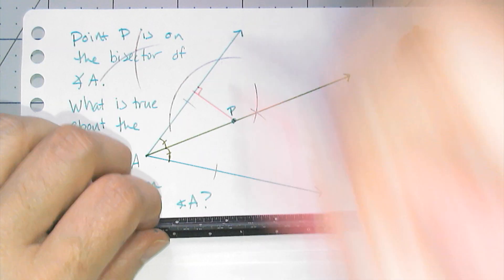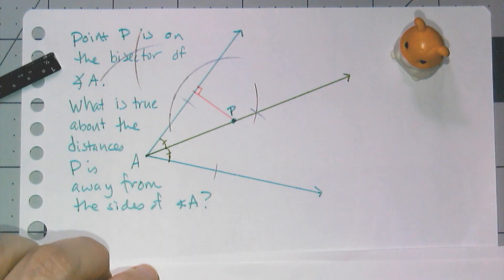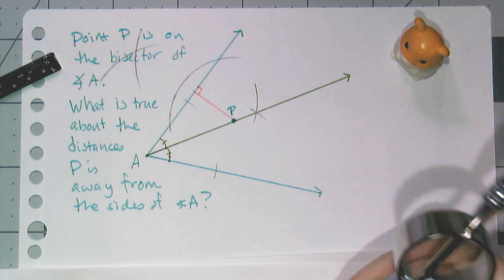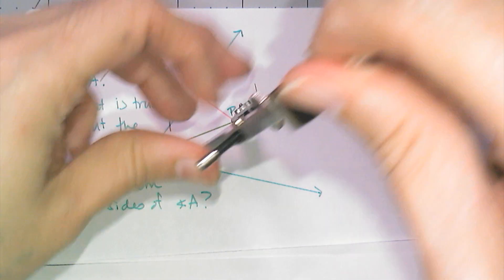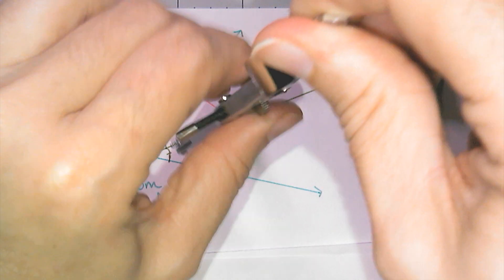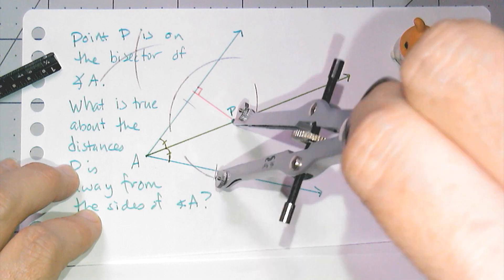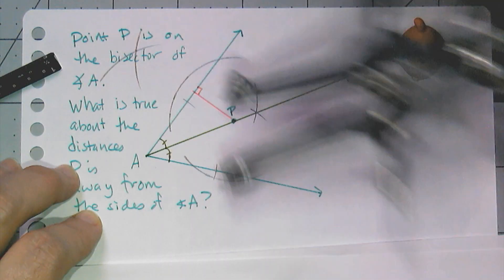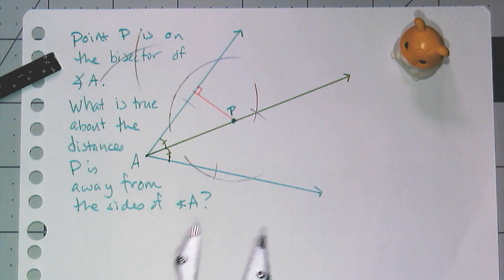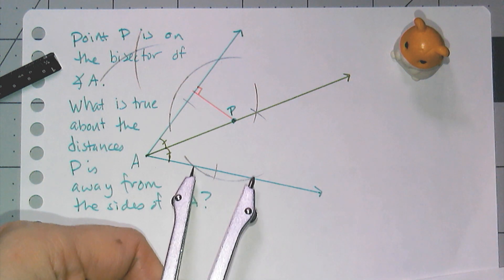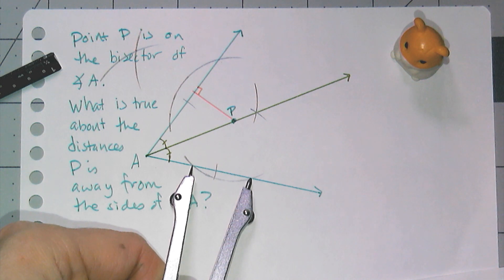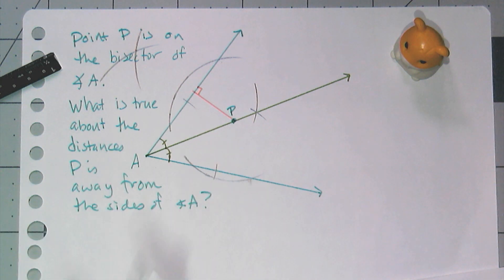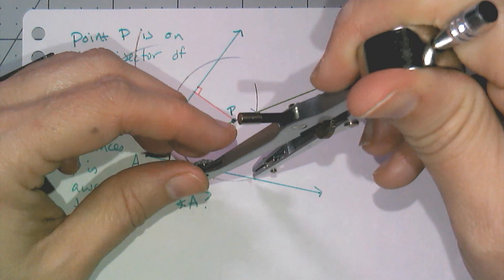Then of course I need to do the same thing on the other side. I'm going to take my compass and I need to swing an arc that intersects the side of the angle twice, and then I need to create the perpendicular bisector of the line segment created by those two points. I only need to swing the arc that goes kind of below the point P.